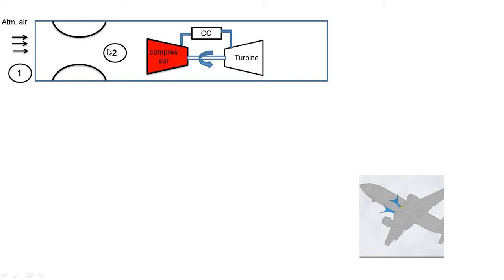The process 1 to 2 is the isentropic compression process. Isentropic means entropy remains constant. During this compression, pressure is increased and temperature is increased.